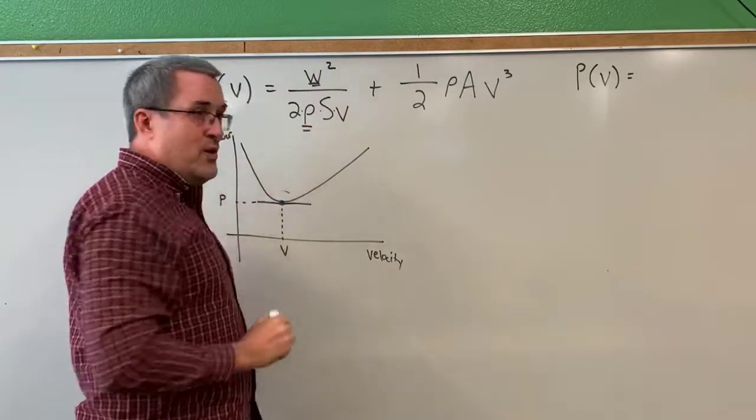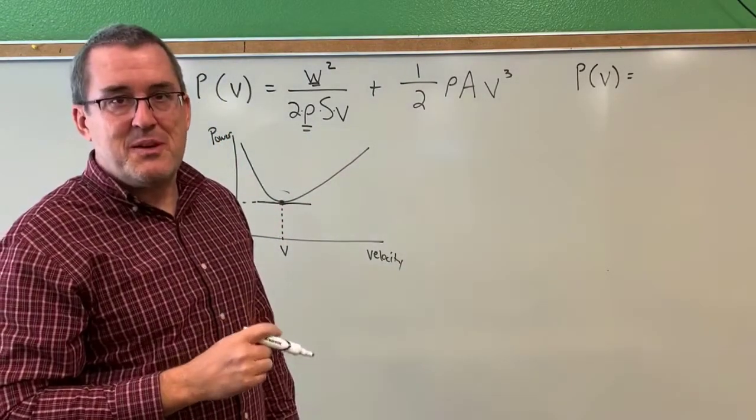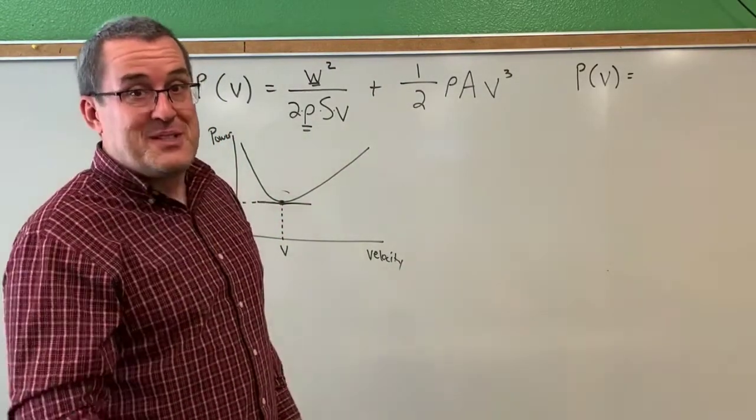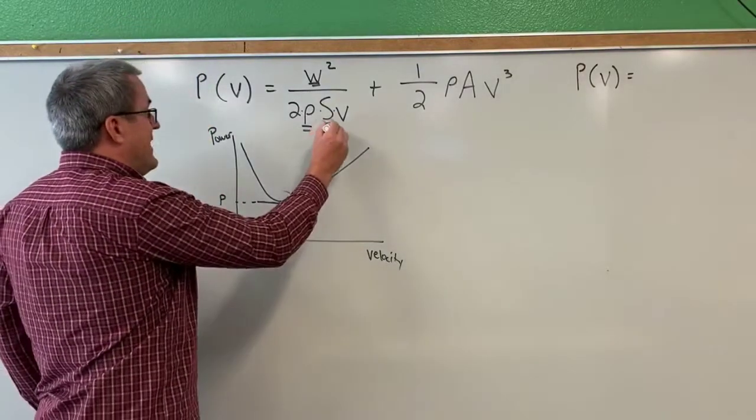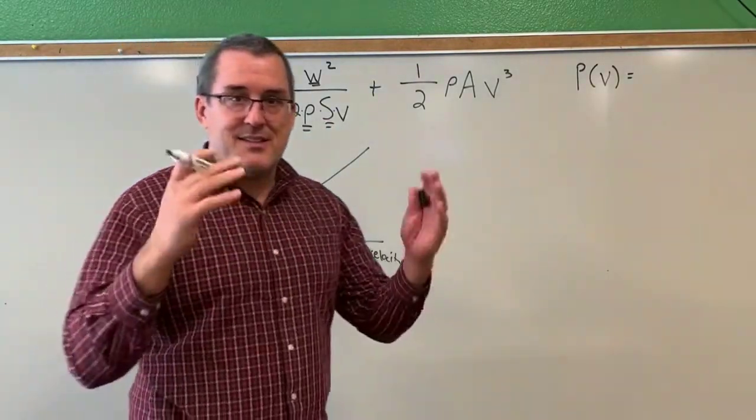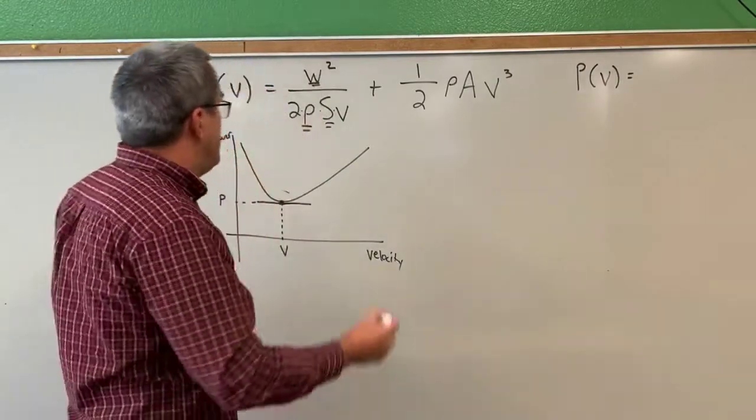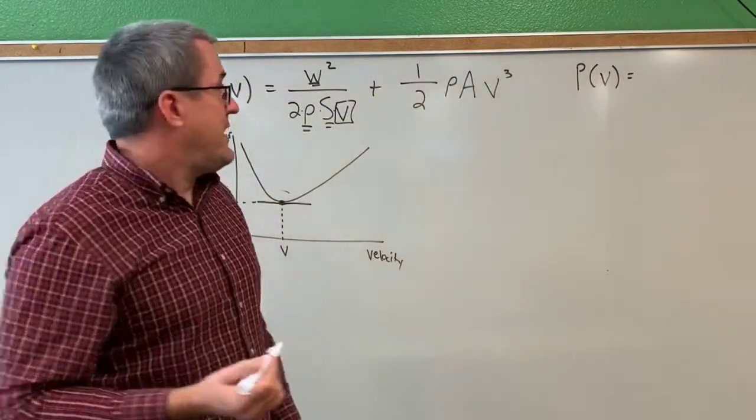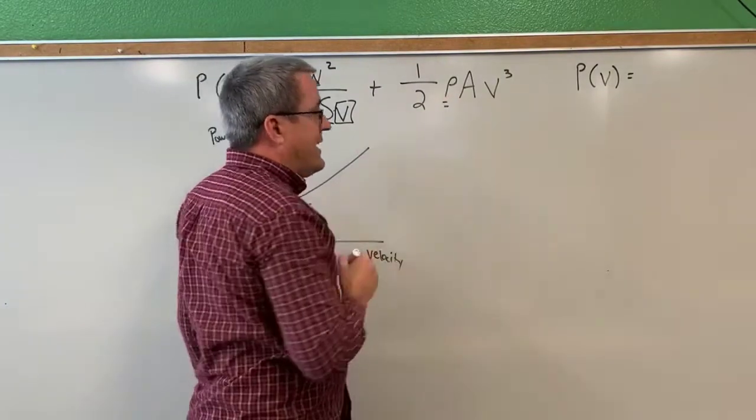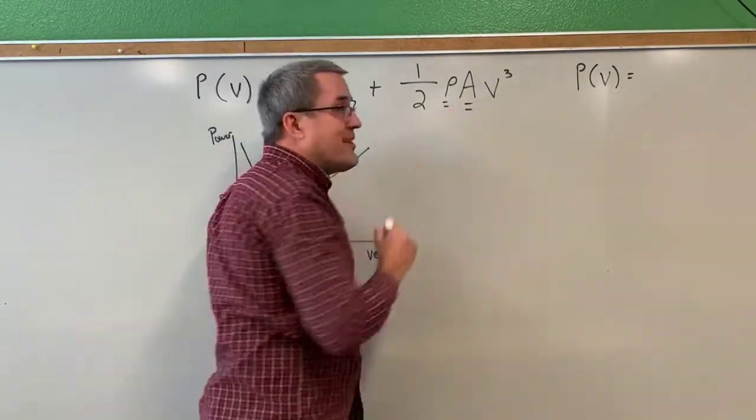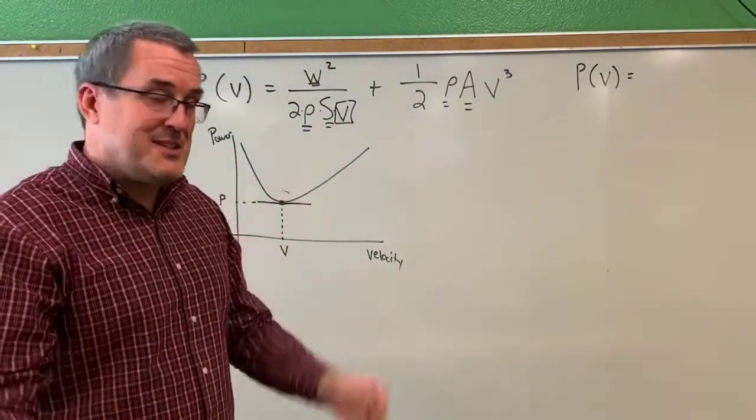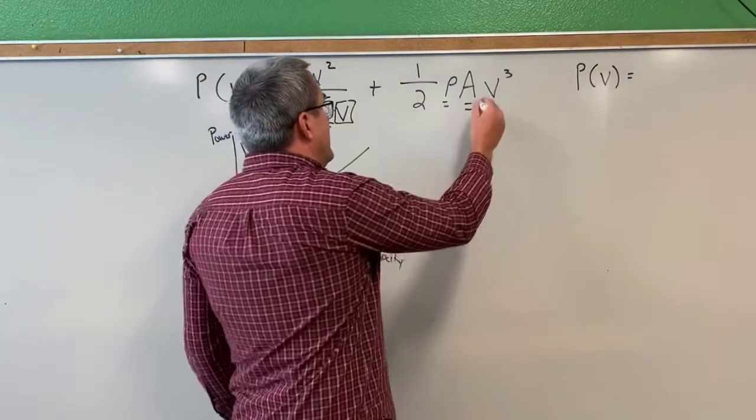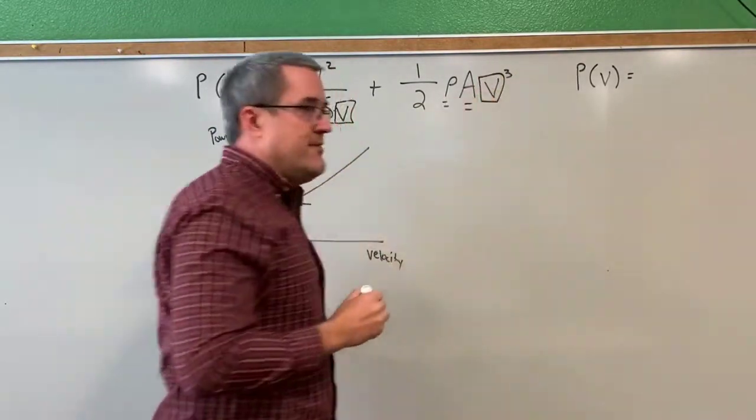Remember rho. I've used R on Desmos because it doesn't like Greek letters. So rho is the density of the air. S is a positive constant associated with the size and shape of the bird. There's our only variable, our independent variable V. There's rho again, the density of the air. There's another constant associated with the size and shape of any particular bird. And then there again is our one variable V.